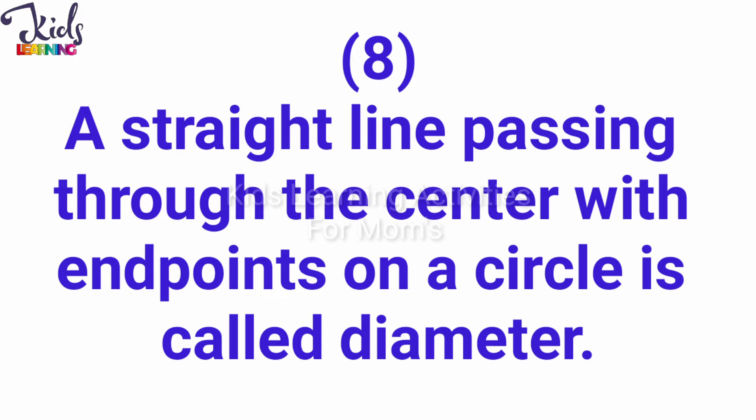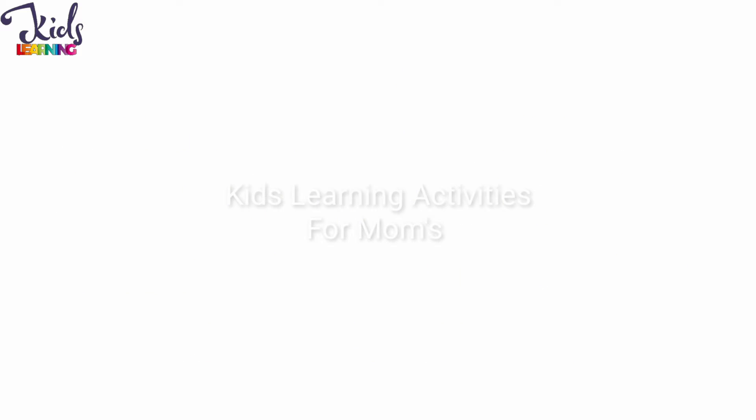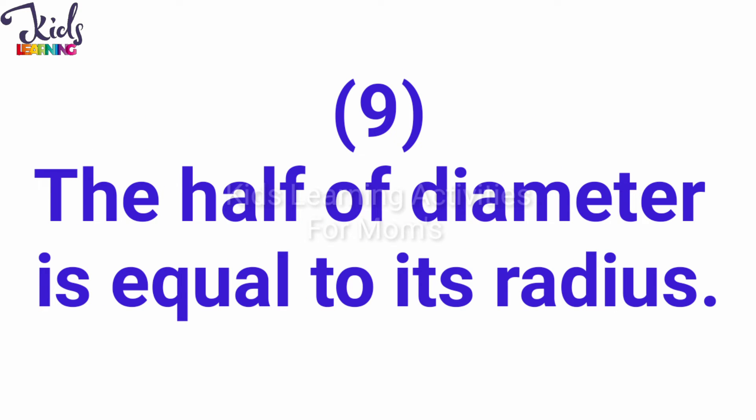A straight line passing through the center with endpoints on a circle is called diameter. The half of diameter is equal to its radius.